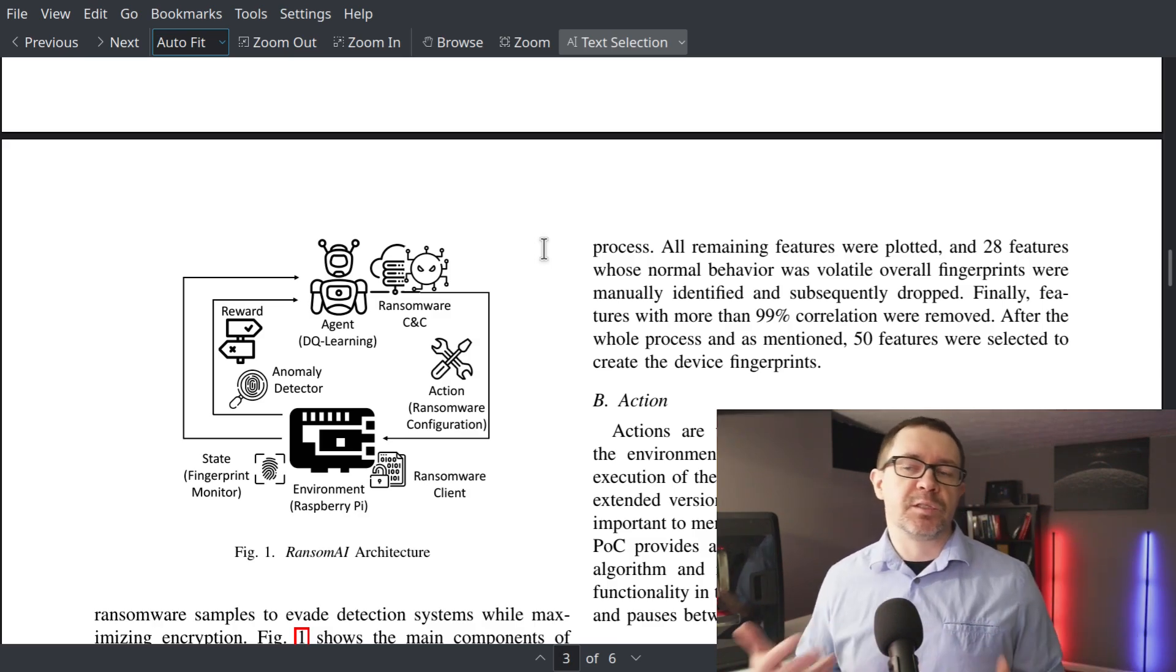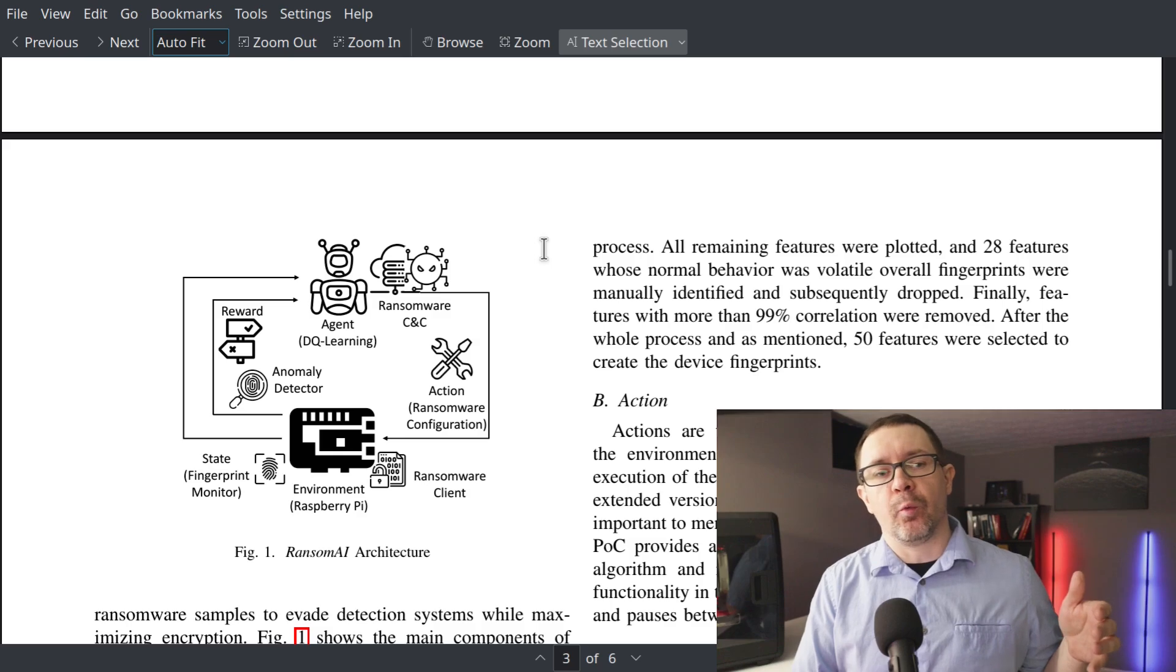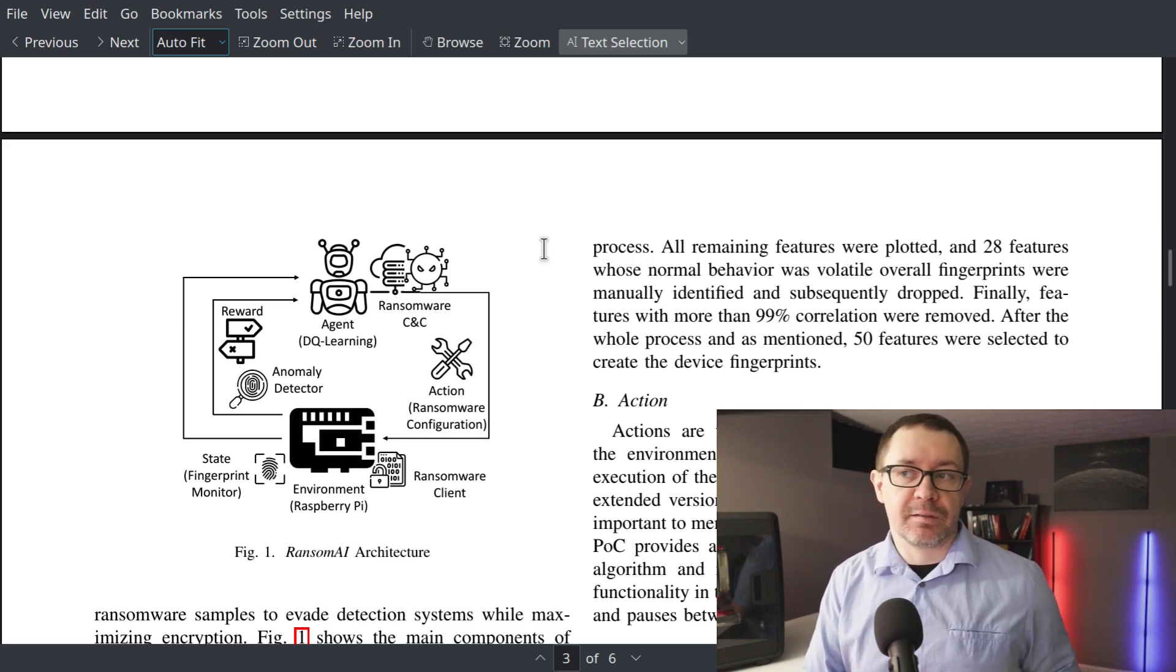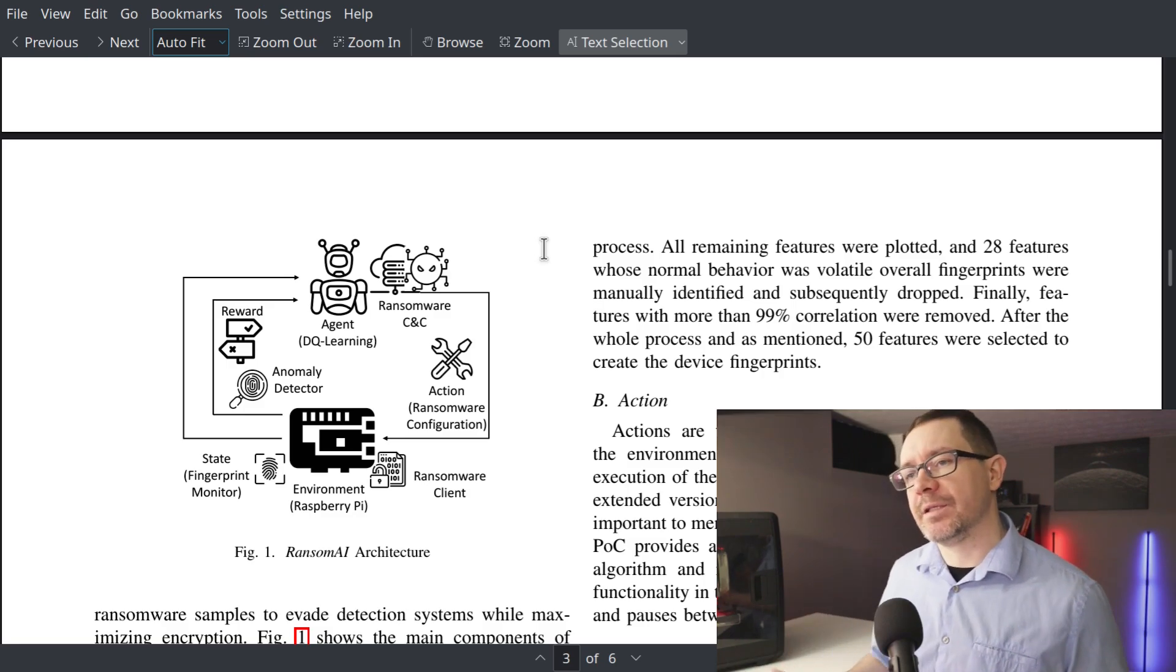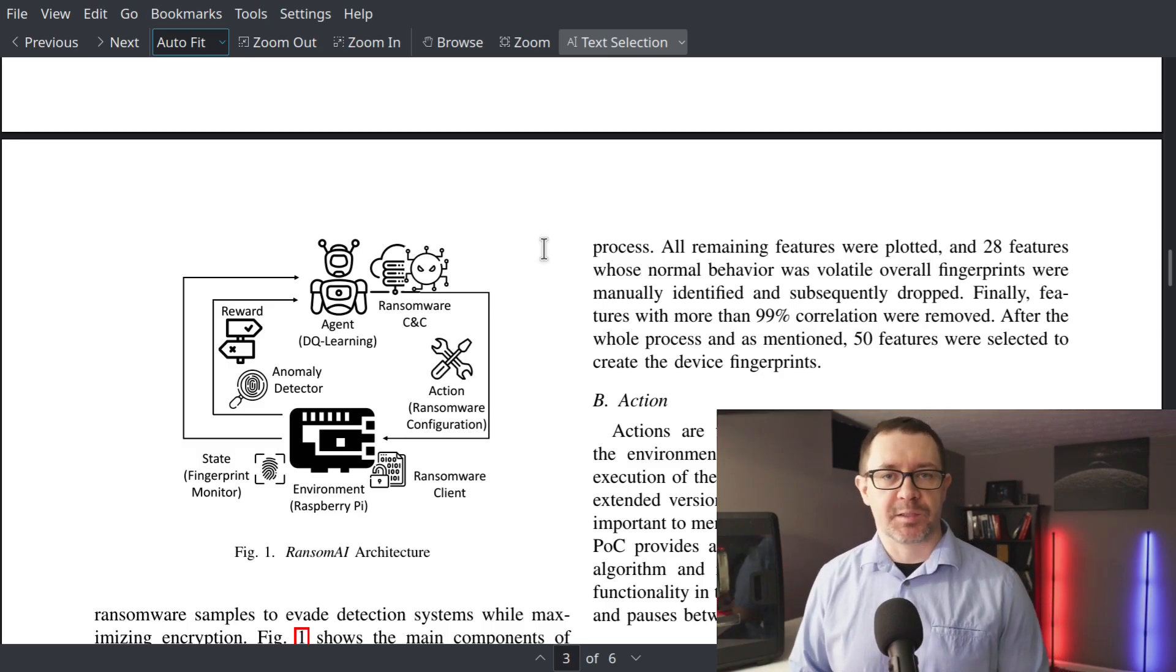And this feeds into a reward function where the agent is rewarded for encrypting at as high of a rate as possible while not being detected in its nefarious operations. And all of this is fed back into the Deep Q Learning agent so that it is able to encrypt the system as quickly and as quietly as possible.